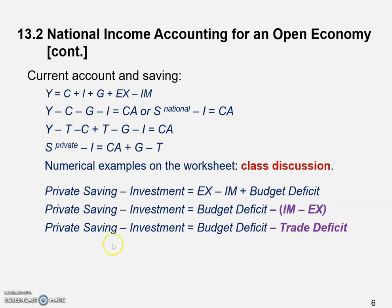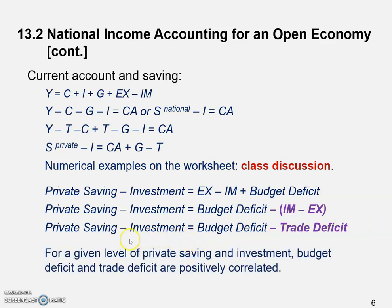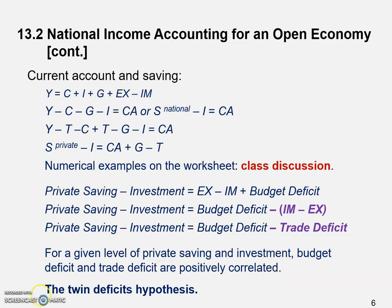This is finally what we want. For a given level of private saving and investment — meaning the left-hand side is fixed as a constant — budget deficit and trade deficit are positively correlated. When budget deficit goes up, trade deficit must go up as well so the difference remains the same. Vice versa, if trade deficit falls, budget deficit must fall too. This is the so-called twin deficit hypothesis.